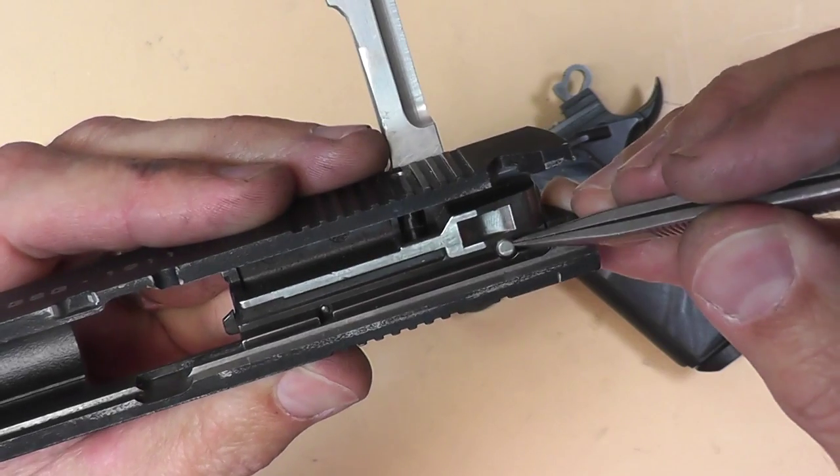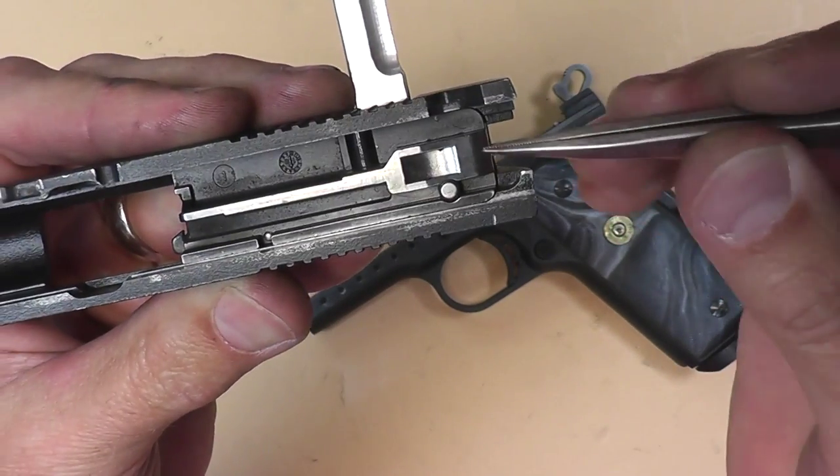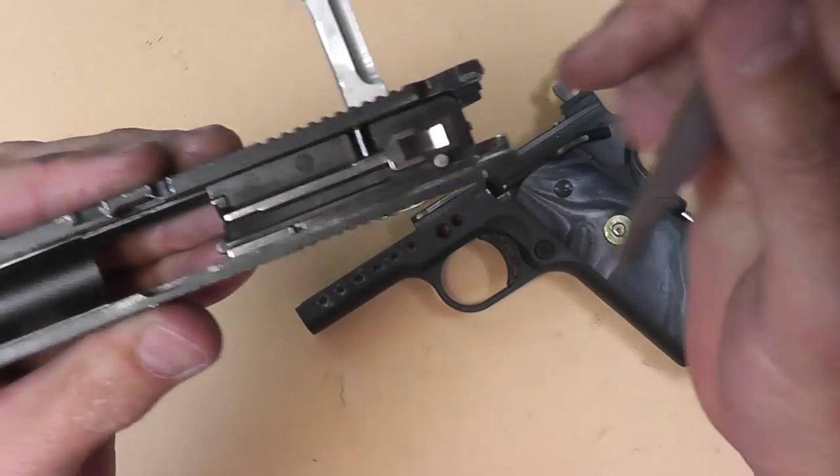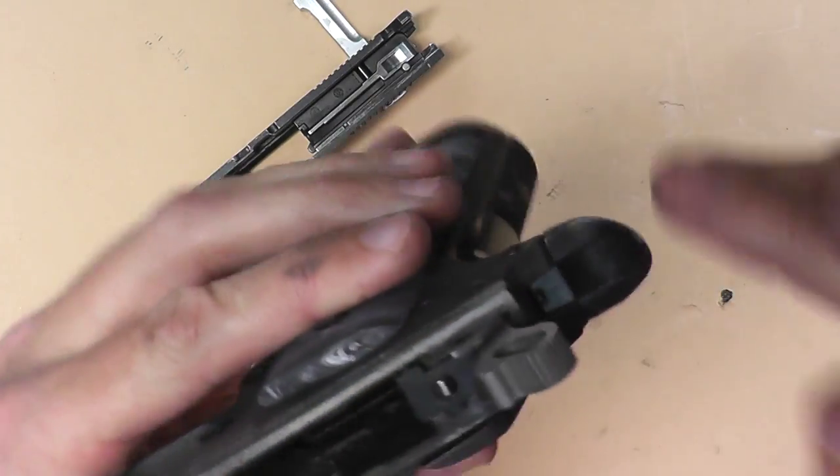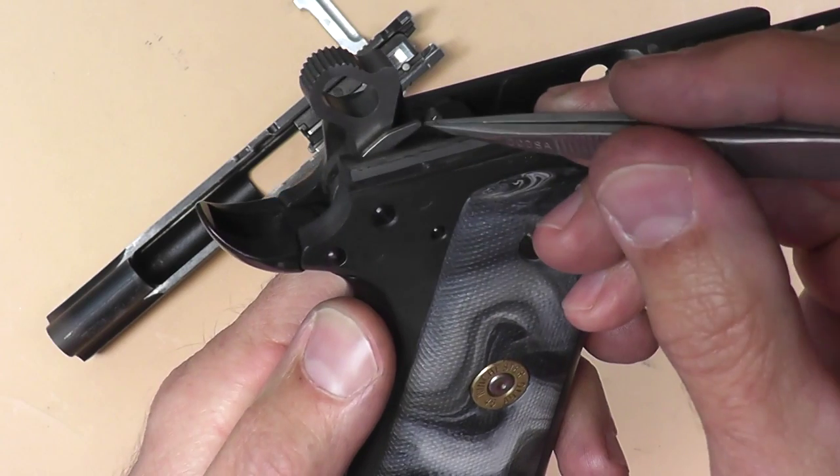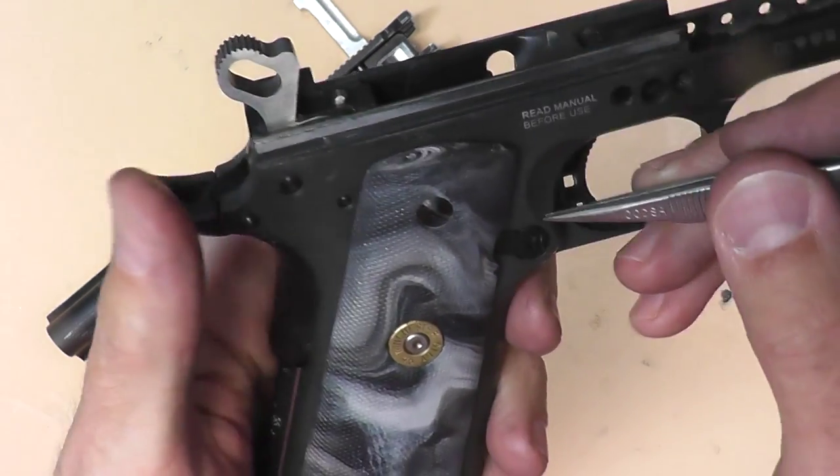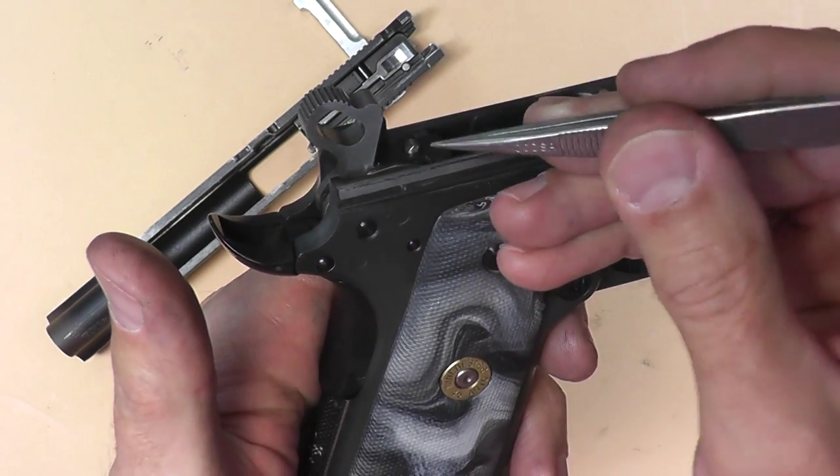This has to be depressed in order for the firing pin to fully go forward and ignite the cartridge up here. Now what presses that upward is some of the series 80 components in the frame here. You'll see this little tab right here. I've got it sticking up at the moment, but when you depress the trigger it comes up and sticks or moves that little plunger upward.